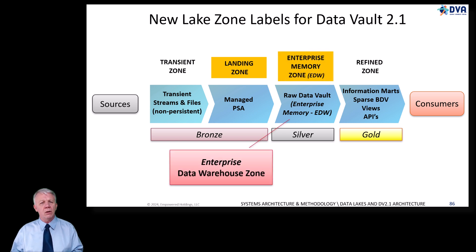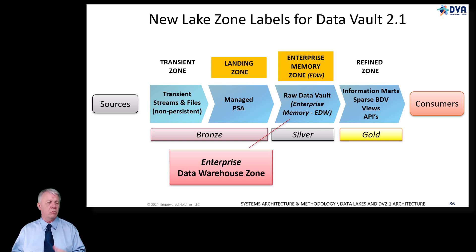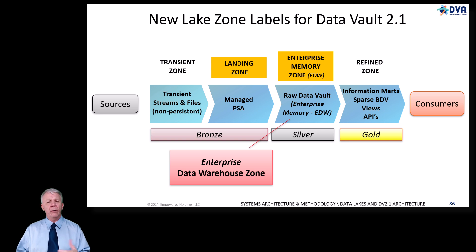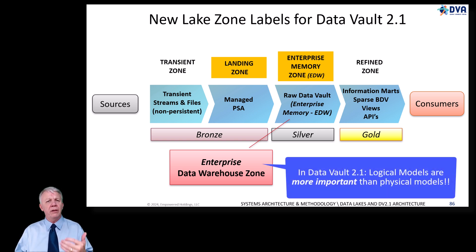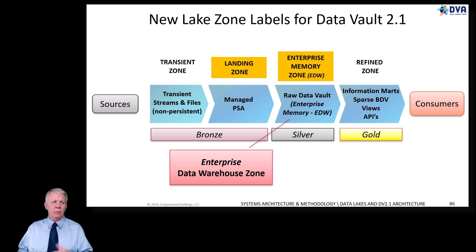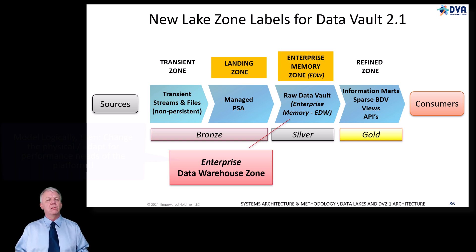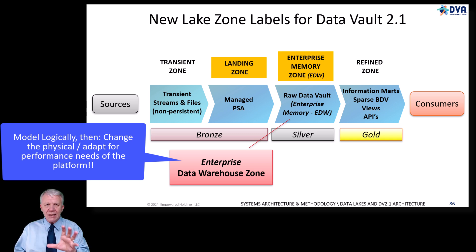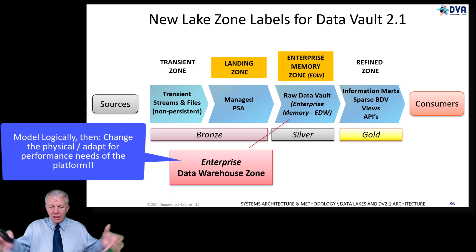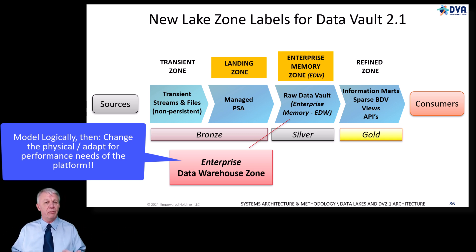We prefer to call the trusted zone the enterprise memory zone — or the enterprise data warehouse zone — and this is where we put our data vault. In 2.1 going forward, we like to say logical modeling is more important than physical. Your enterprise memory zone might be physically built in Cassandra, MongoDB, or Iceberg — you can't use hubs, links, and satellites at the physical level and keep performance running. You're absolutely right, and you shouldn't. Model it logically in hubs, links, and satellites by business concept and business key. Then build it physically by collapsing or denormalizing the structures as needed to meet the performance needs of the platform.